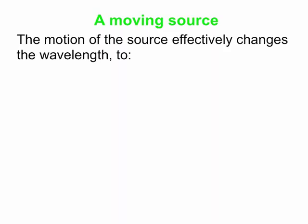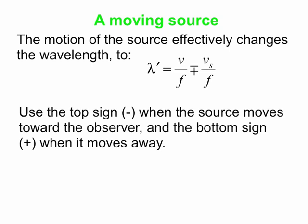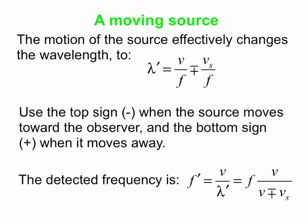The source motion effectively changes the wavelength. You get a different wavelength which is the original one modified by the source speed. The top sign applies when the source moves toward the observer, the bottom sign when it moves away — note it's a minus-plus here, the opposite of the observer case. The detected frequency f′ = v / λ′, which works out to f′ = f × v / (v ∓ v_s). Use the top sign for motion toward and the bottom sign for motion away.